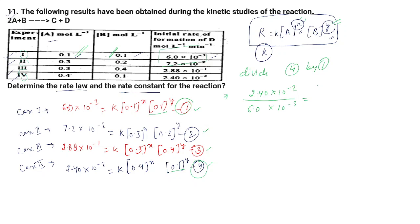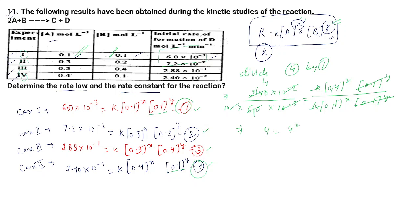After k cancels and the [B]^y terms cancel, we compare the [A]^x terms. The ratio simplifies to give us 4^x = 4, meaning x = 1. So the order with respect to A is 1.